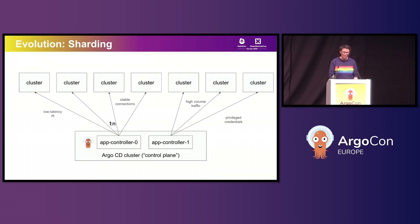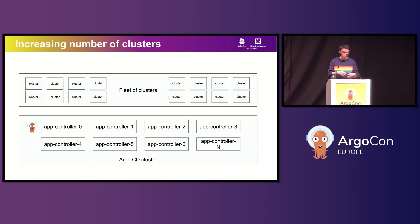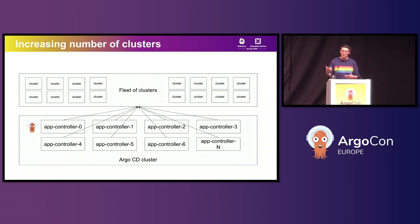Sharding also created its own set of challenges. When you get lots of clusters and start treating them as cattle rather than pets, you also have to consider scaling out your control plane cluster to host all the application server replicas required to manage all these resources. We still haven't solved the core issues like vertical scaling requirements of the application controller, how you map clusters to shards, and network requirements. One of the biggest challenges is that when you scale up, you have to tune for the biggest and busiest clusters — you can't do them individually — and with a non-homogeneous array of clusters, you'll likely end up with a lot of wasted resources.